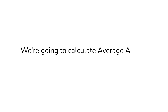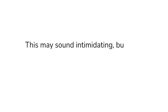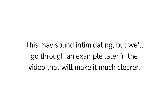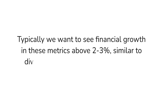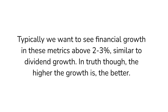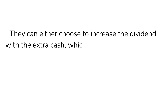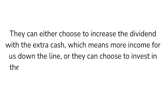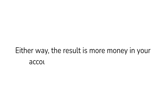There are many ways to calculate financial growth, but we're going to calculate average annual growth over a five-year period. To do this, we calculate the growth for each year, then average them. The best free resource to calculate financial growth is MarketWatch. MarketWatch actually calculates the year-over-year growth for us, so the only thing left to do is take the average for each income metric. Typically we want to see financial growth in these metrics above 2 or 3%, similar to dividend growth. Strong financial growth will open up possibilities for management — they can either choose to increase the dividend, which means more income for us down the line, or they can choose to invest in the growth of the business, which will lead to higher share price and larger overall returns.